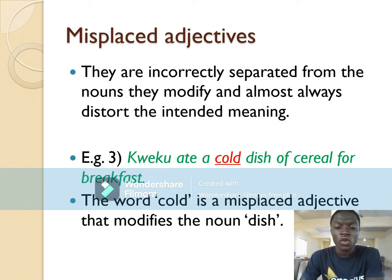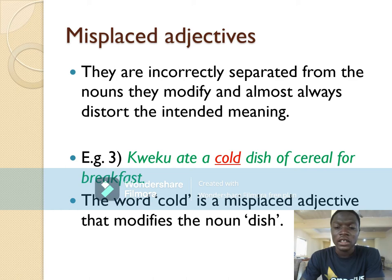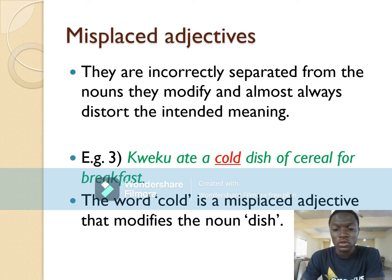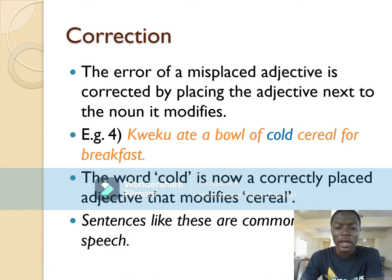Example: 'Coco ate a cold dish of cereal for breakfast.' The adjective 'cold' is wrongly placed — it is supposed to modify 'cereal' but has been placed next to 'dish.' The corrected version is: 'Coco ate a bowl of cold cereal for breakfast.' The word 'cold' is now correctly placed as an adjective modifying 'cereal.'